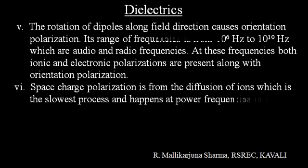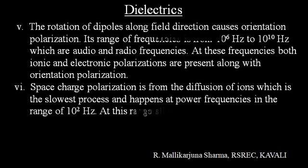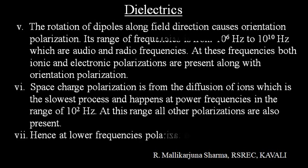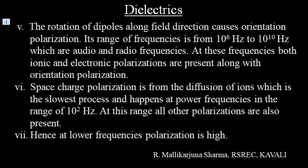Sixth point: Space charge polarization is from the diffusion of ions, which is the slowest process, and happens at power frequencies in the range of 10^2 Hz. At this range, all other polarizations are also present.